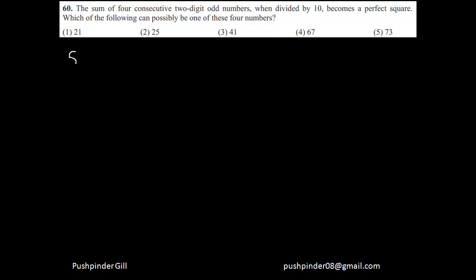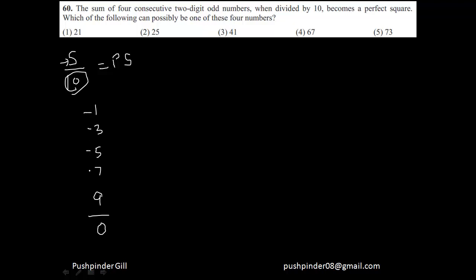He's saying that the sum of four consecutive odd integers, when divided by 10, gives a perfect square. That means the sum must be divisible by 10 — so the sum of four consecutive odd integers must give a number divisible by 10. If I list down all the possible odd unit digits, for the number to be divisible by 10, I should get a zero at the end. Let's see which four consecutive odd unit digits give a sum of 10. If I try 1, 3, 5, and 7...